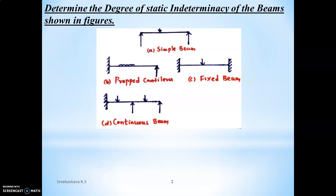Basically, static indeterminacy depends on main factors like internal forces developed in the members of the structures, external support reactions, and also joint equilibrium conditions. There are three major factors: one is internal forces developed inside the structures, two is external support reactions, and three is joint equilibrium conditions with respect to the type of structure.